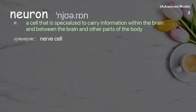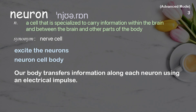Neuron. A cell that is specialized to carry information within the brain and between the brain and other parts of the body. Examples: Excite the neurons. Neuron cell body. Our body transfers information along each neuron using an electrical impulse.